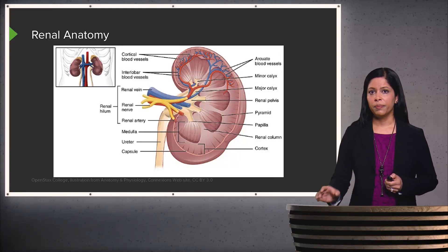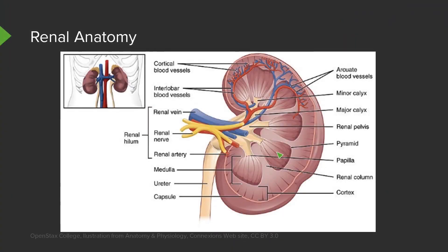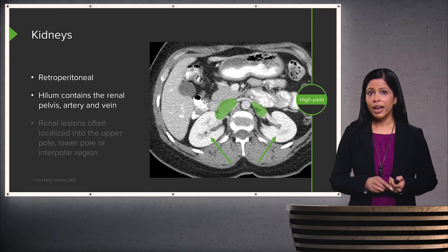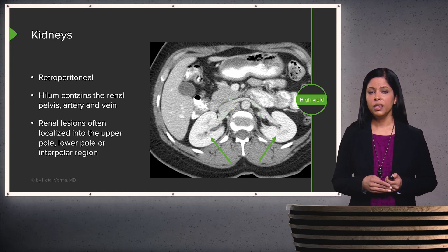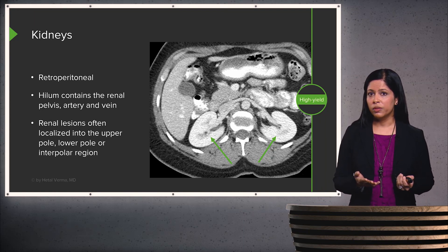The kidney has a cortex, multiple renal pyramids comprising the renal medulla, and the renal hilum where the ureter and blood vessels enter and exit. The kidneys are retroperitoneal organs. The hilum consists of the renal pelvis, the artery, and the vein — the pelvis drains into the ureter. Renal lesions are localized to the upper pole, lower pole, or interpolar region, which is located around the level of the hilum.